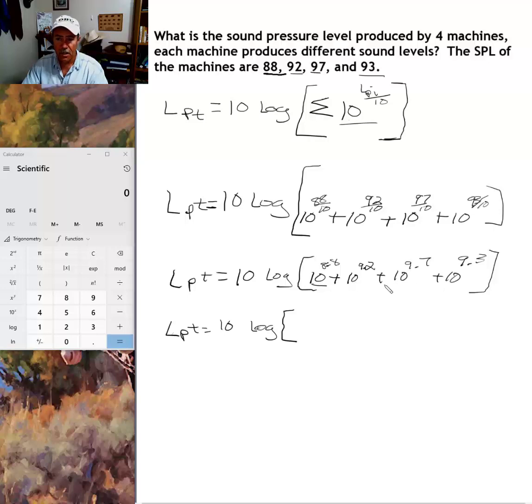So what we want to do, we want to add all of these numbers within the brackets: 10 to the 8.8 plus 10 to the 9.2 plus 10 to 9.7 and so on. And I'm going to do that all within the calculator. And this is how you do it with the Windows 10 scientific calculator. In class, if you have questions, I can show you how to do it with the TI-30.